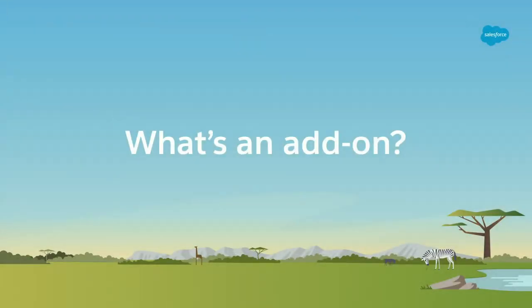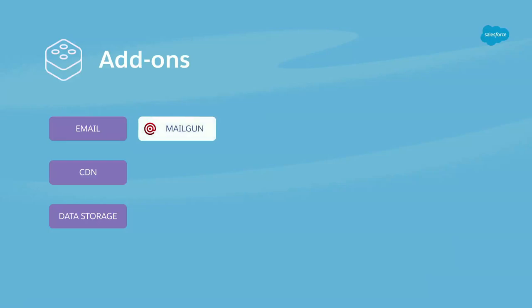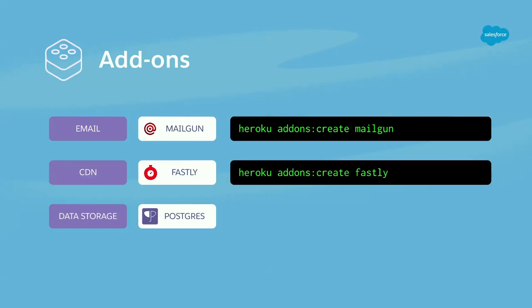So what's an add-on? Your application needs things like email, a CDN — if you want to send cat GIFs to China they need to load quickly — and data storage. These are all the pieces that go beyond the code, and they can be part of your experience on the Heroku platform. For email you can use something like Mailgun — we have about a dozen email add-ons. We have many CDN add-ons as well; Fastly is one of my favorites. We also have data storage with Postgres. Creating these add-ons is just as easy as creating your application: `heroku addons:create fastly`.